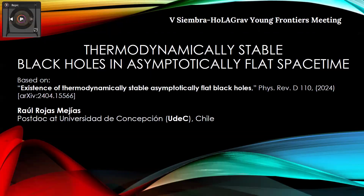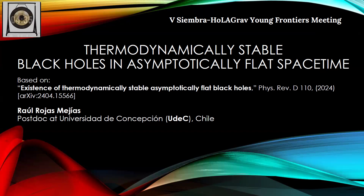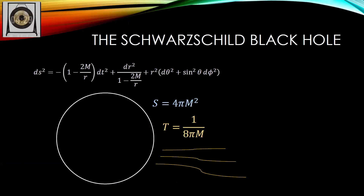I will talk about stable black holes in asymptotically flat spacetime. In the real world, black holes are not isolated objects — they interact with their environment, absorbing and emitting radiation. The stability of black holes is a relevant aspect to study as it may provide insights into the formation and evolution of supermassive black holes at the center of galaxies. To begin, consider the simplest case: a non-rotating, electrically neutral black hole in thermal equilibrium with, for instance, the cosmic microwave background, meaning the Hawking temperature equals the CMB temperature.